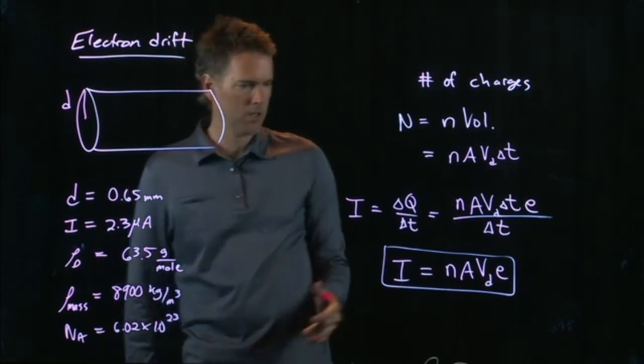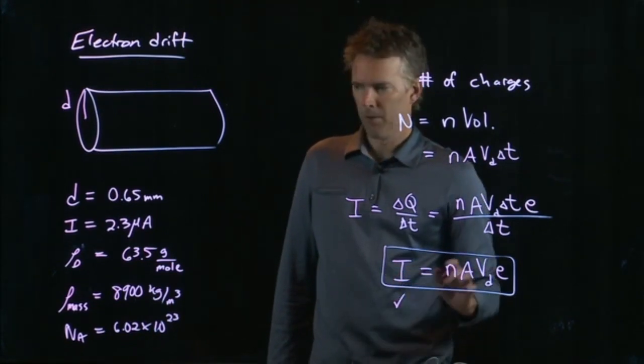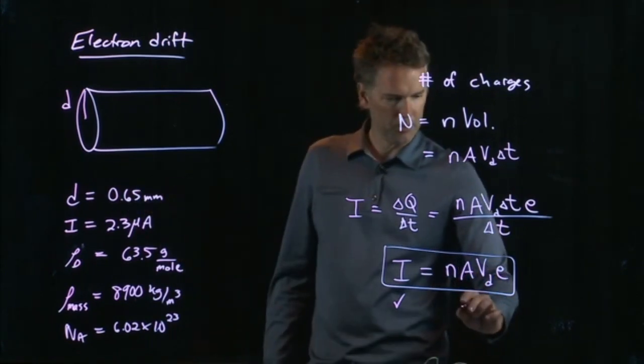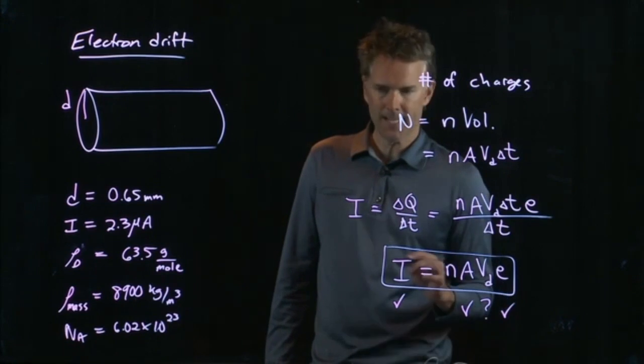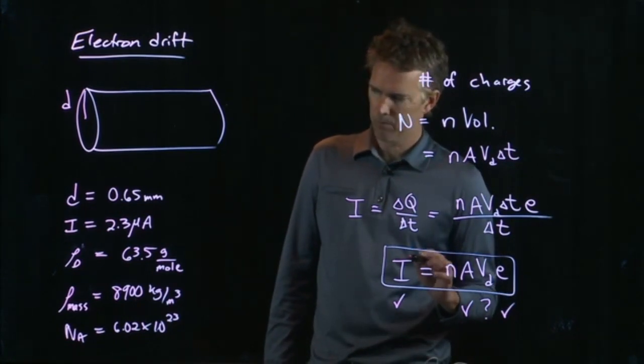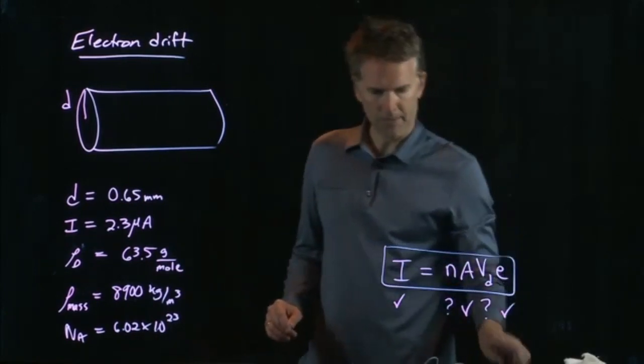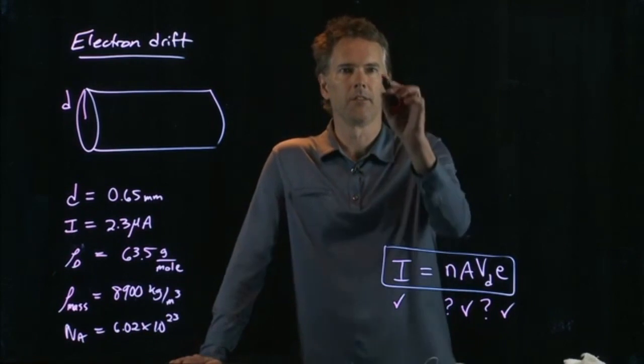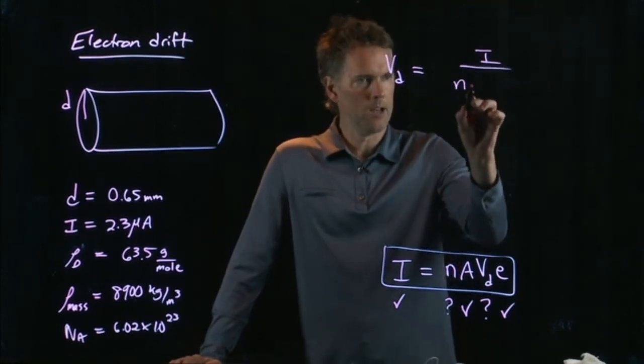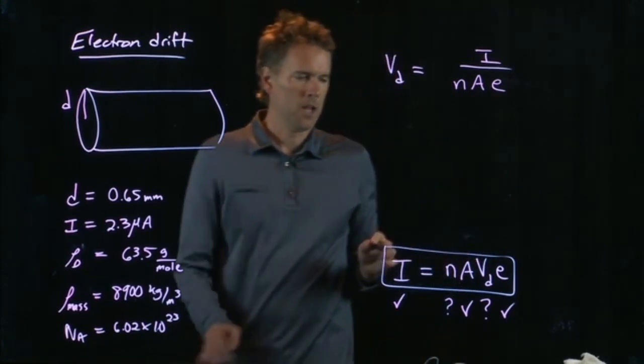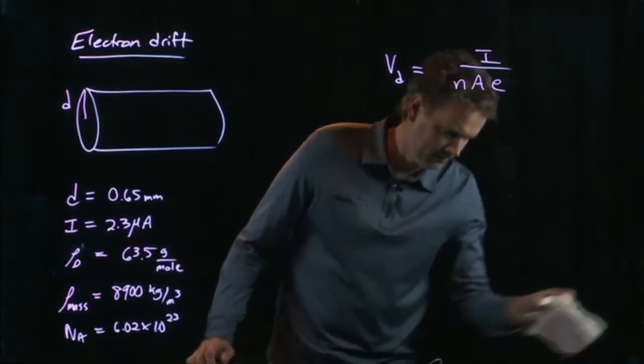Do we have enough information to solve this thing for the drift velocity? Well, we have I. We have the current. We don't really have A yet, but they give us a diameter so we can probably calculate A. We know the electron charge. We're solving for V sub D, the drift velocity. And what is not really clear yet is can we get this number density n? Let's rewrite this equation and we want to solve for drift velocity. V sub D is going to be I divided by little n times A times E. And now we have to worry about what these different things are.